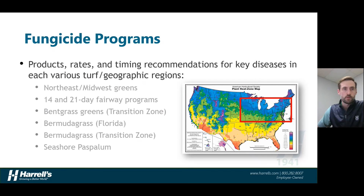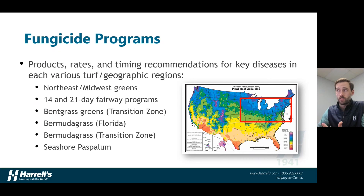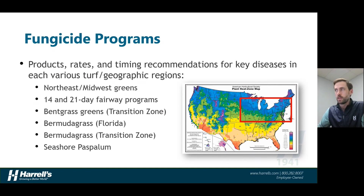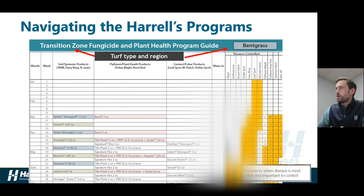We've split these out into a bunch of different programs. We have a Northwest and Midwest greens program, 14 and 21-day interval fairway programs, a Bentgrass greens transition zone program, a Bermudagrass program specifically for the state of Florida, a Bermudagrass program for the transition zone, and a Seashore Paspalum program. We've made all these unique programs because depending on your location and turf type, there's going to be a unique disease spectrum that's characteristic of those locations. Looking at our transition zone fungicide and plant health program guide, the top of the program tells you the regional location and what turf type the fungicide program is applicable for.